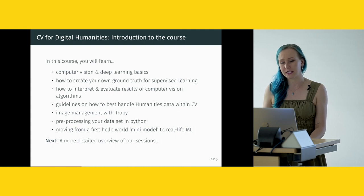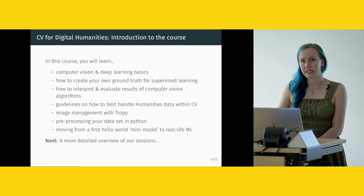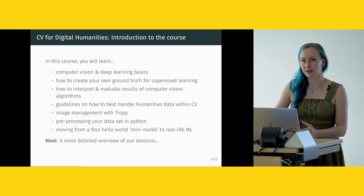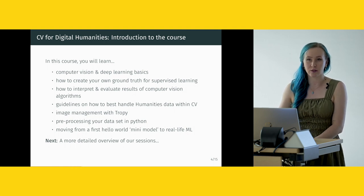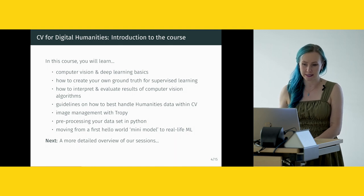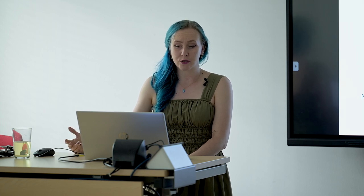We're going to tell you how to create your own ground truth for supervised learning. This skill isn't commonly found in tutorials — many tutorials show you the coding part of deep learning but don't show you how to create your dataset, since most use pre-existing datasets. However, once you want to apply it to your own research, you need to be able to create your own dataset. We will also talk about how to interpret and evaluate results from computer vision algorithms, because you need to be sure your algorithm actually learns something meaningful.